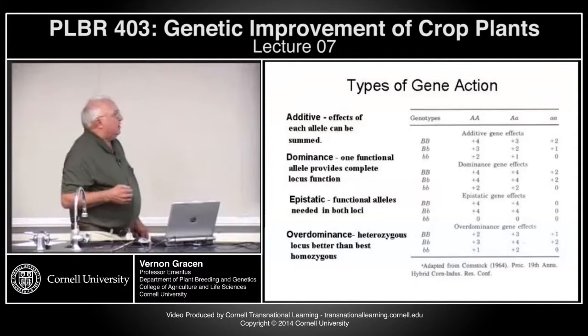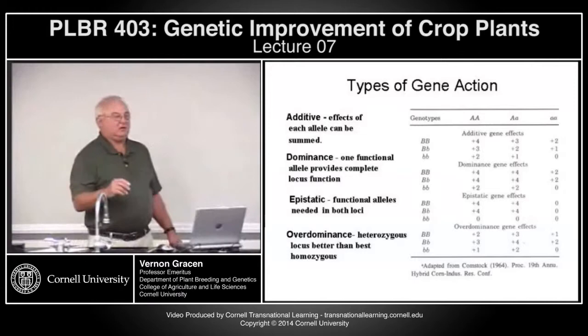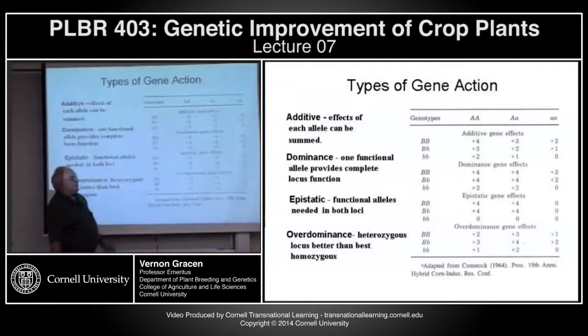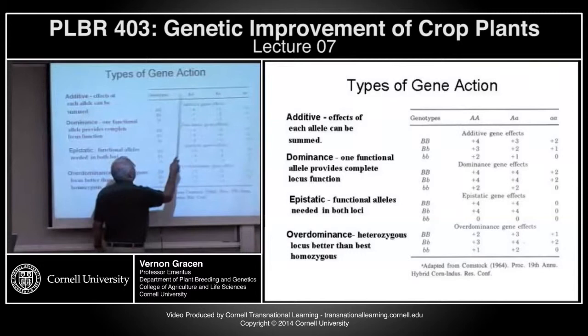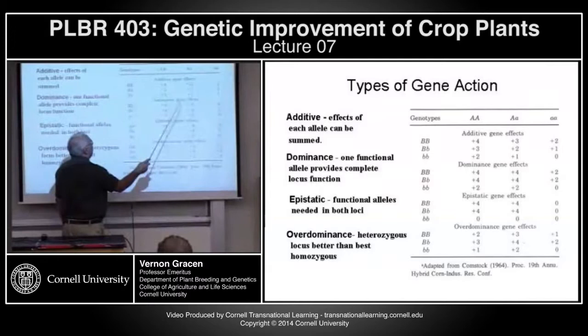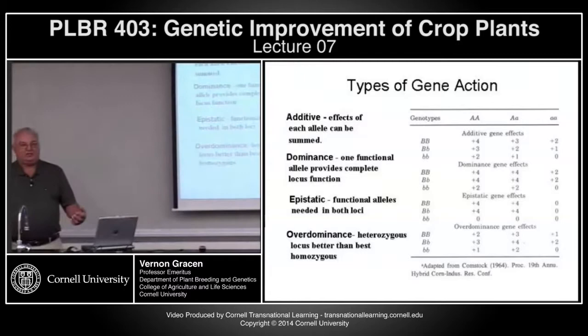Additive effects mean each allele can be summed — each allele gives a discrete incremental effect. For genotype AABB with four dominant alleles, you get an effect of plus four. With AaBB (three dominant alleles), the effect is plus three; two dominant alleles gives plus two; and no dominant alleles gives zero. Each dominant allele incrementally adds one unit to whatever trait we're measuring.